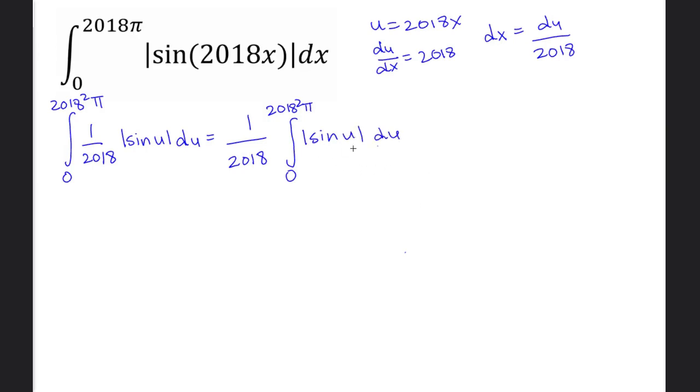What does |sin u| actually mean? When we have the graph of y = sin x, it looks like this, and intersects the x-axis after π. So this is π, this is 2π, and so on.